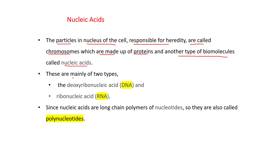There are mainly two types of nucleic acids: first one is deoxyribonucleic acid (DNA), and ribonucleic acid (RNA). Since nucleic acids are long chain polymers of nucleotides, they are also called polynucleotides, that is polymers of nucleotides.